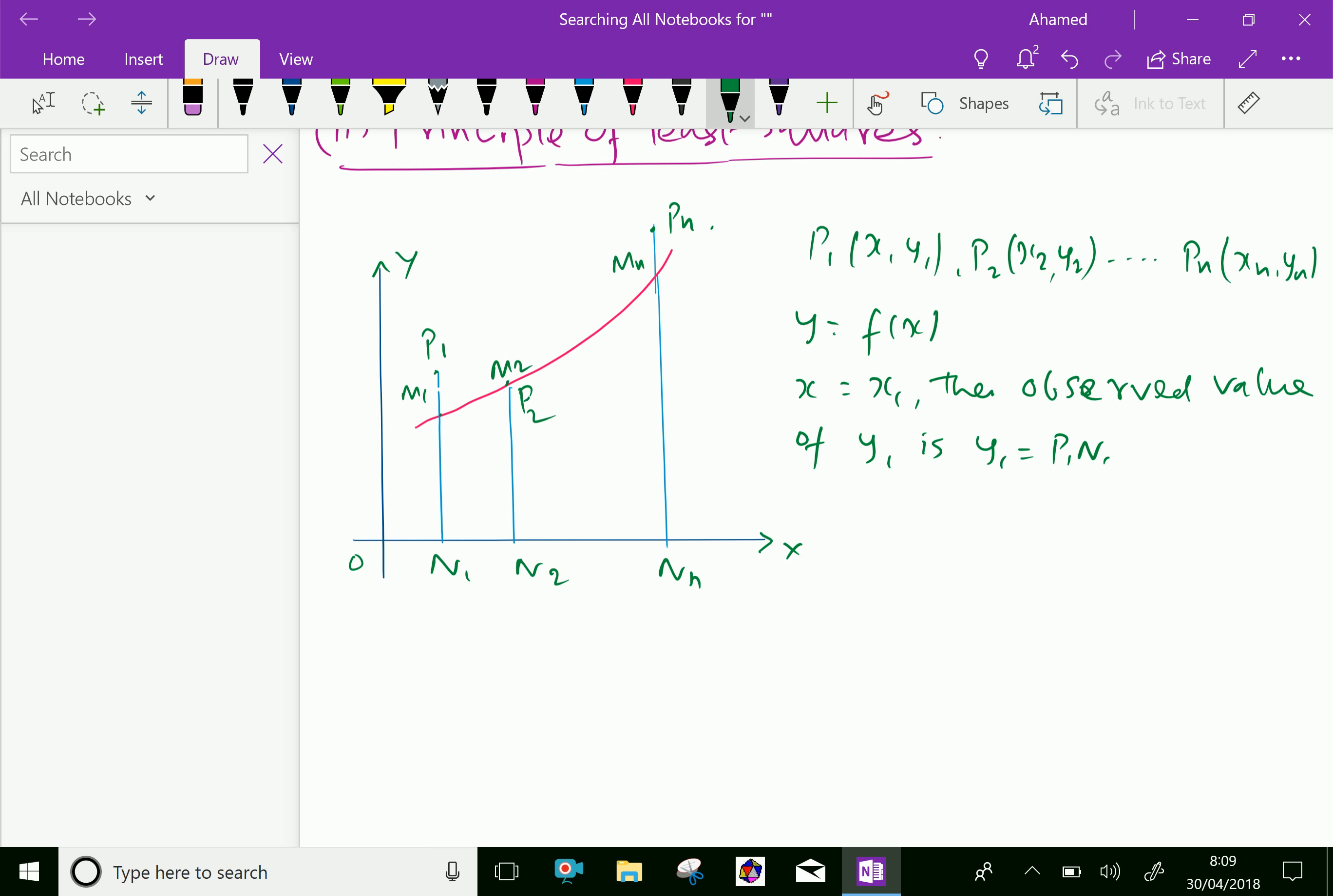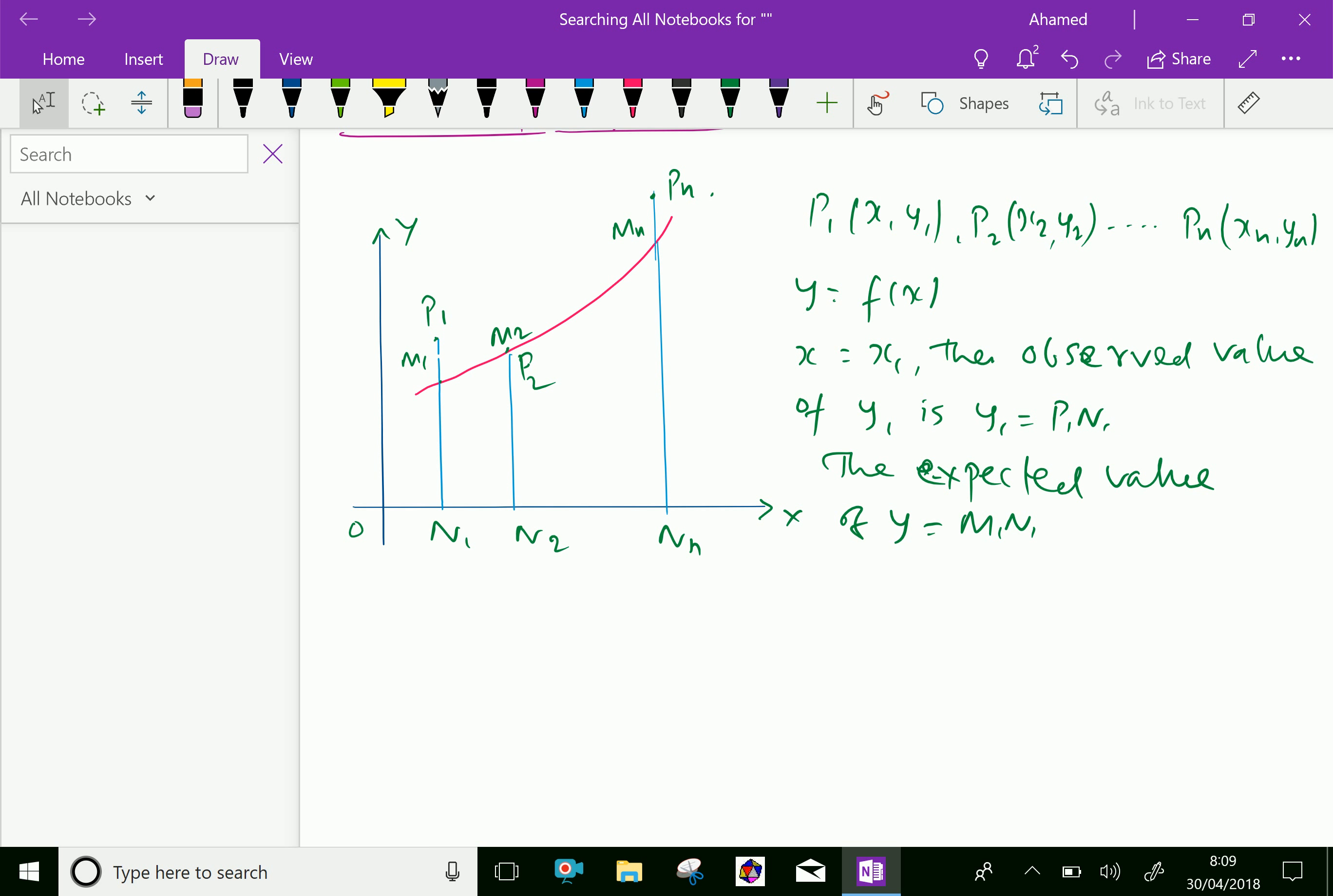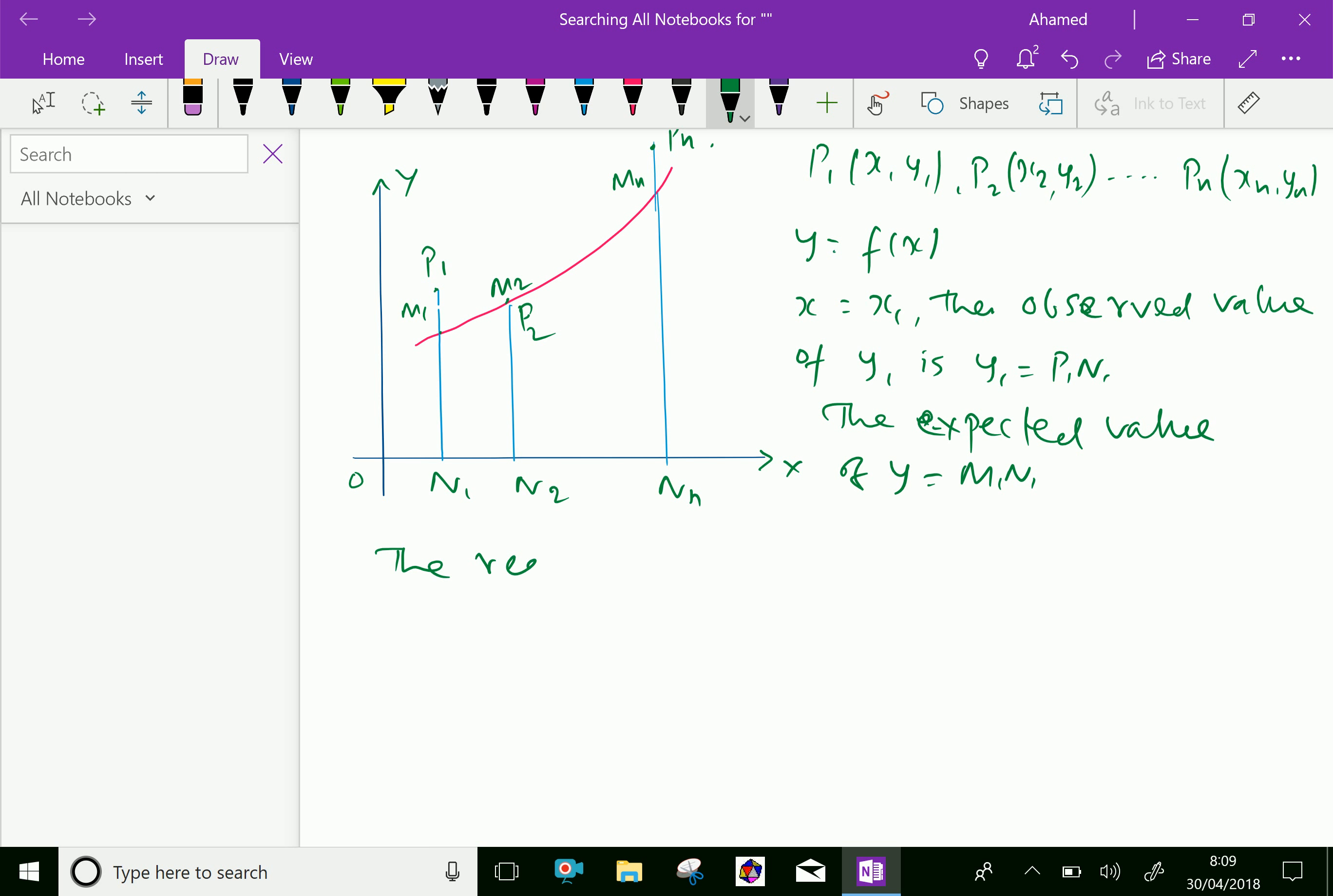The expected value of y equals M1N1. Therefore, the residual, that means small changes, the residual D1 is the difference between both values. That is D1 equals observed value minus expected value.